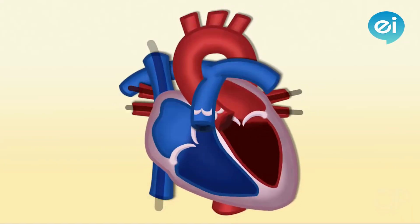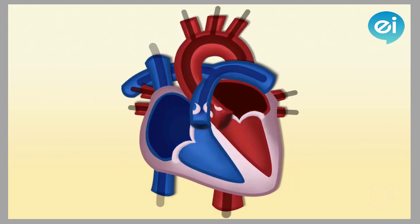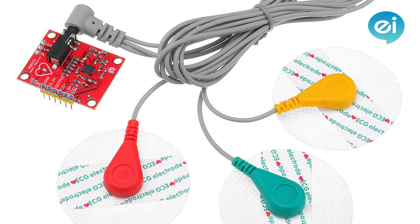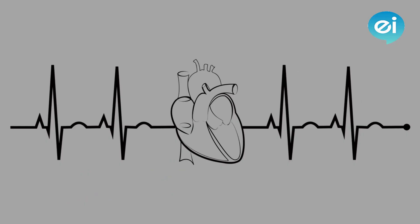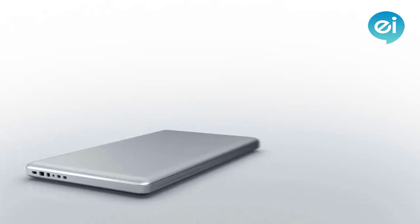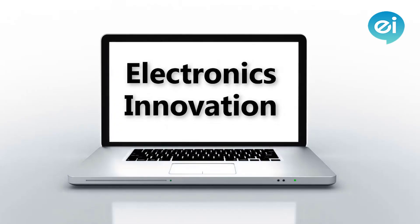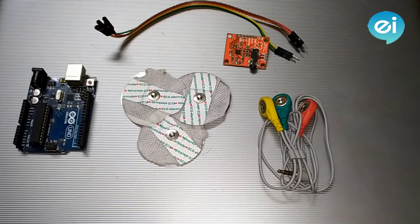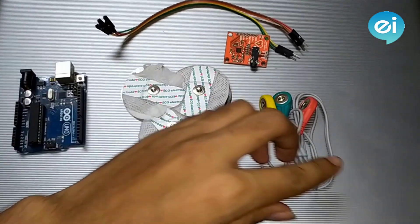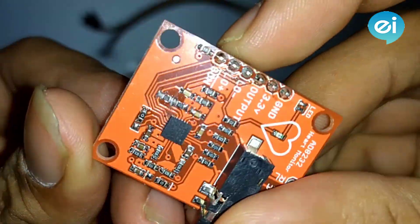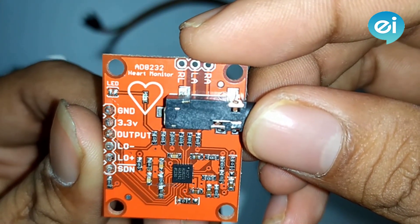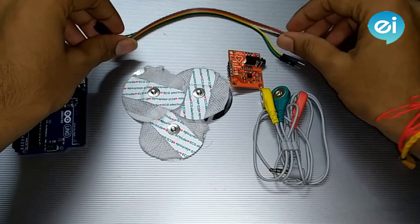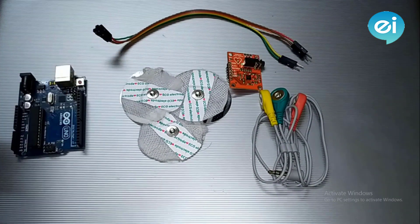Hey guys, welcome to Electronics Innovation. Today we are going to see how the heart beats, how it pumps blood to the whole human body, and what is the AD8232 and how it works — and what is the theory behind this Arduino cardiogram. So let's get started. The required components are an Arduino development board, electrodes and electrode connecting wires, AD8232 sensor breakout board, and a bunch of connecting wires.